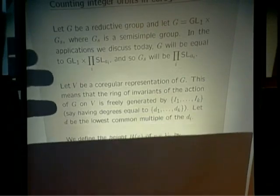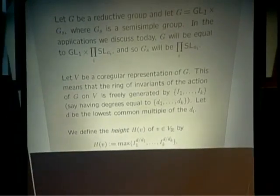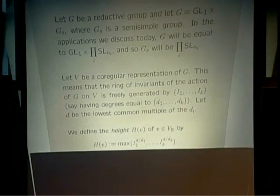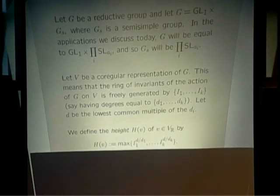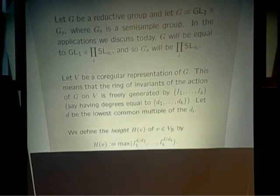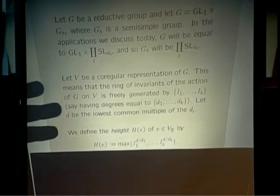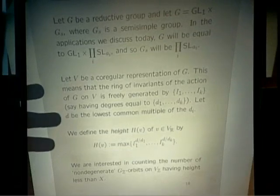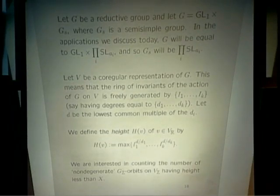We're interested in counting points of bounded height. The height of a point in this representation is defined as the maximum of the absolute values of the invariants raised to appropriate powers — we raise I_j to the power D/D_j so that they all have degree D, making them comparable. Our problem is to count the number of orbits under the action of the integral group on the lattice of integral points having height less than X. For example, for binary cubic forms there was just the discriminant invariant, and we counted GL2 orbits of binary cubic forms with discriminant less than X.